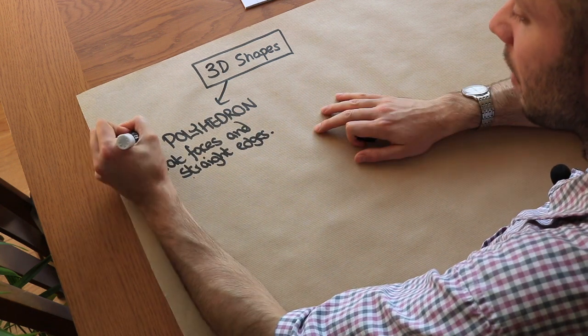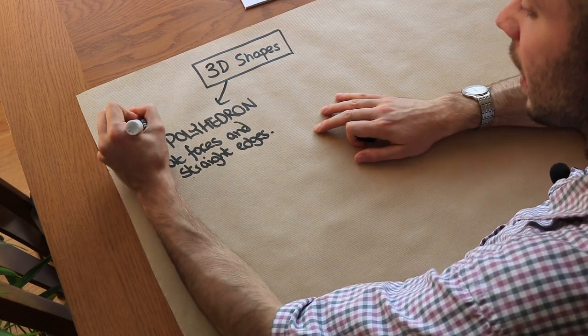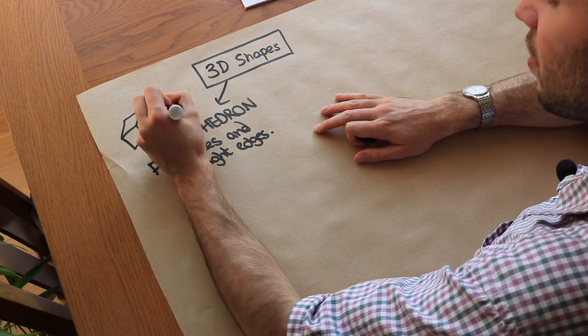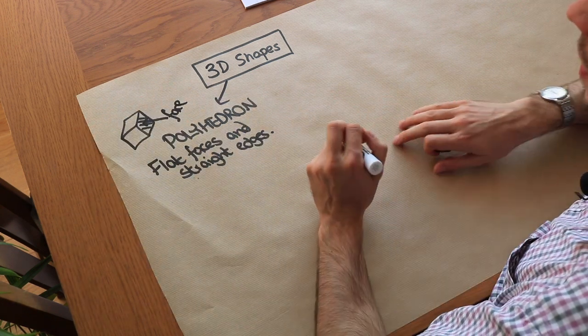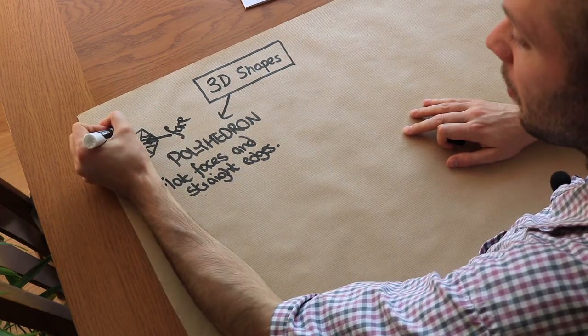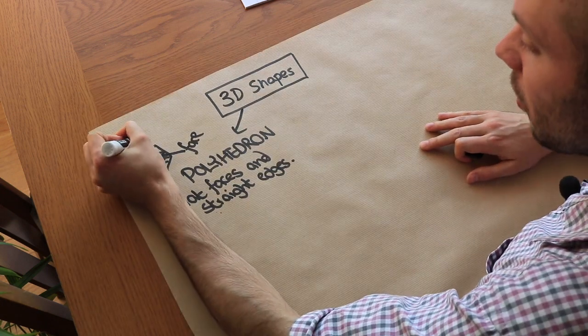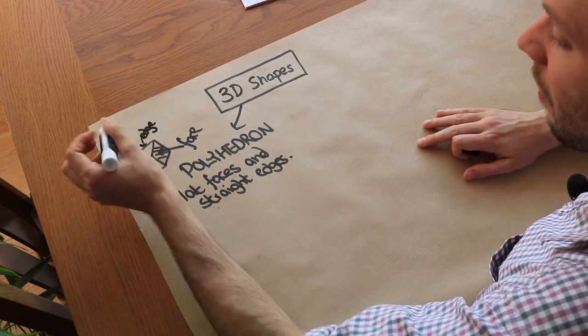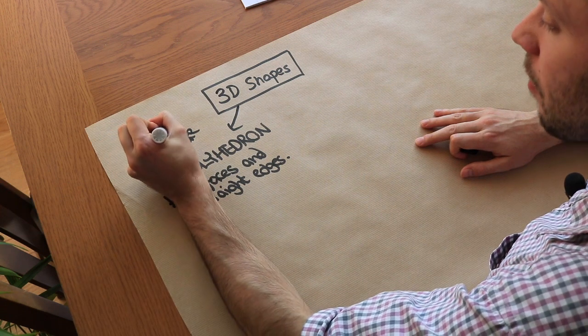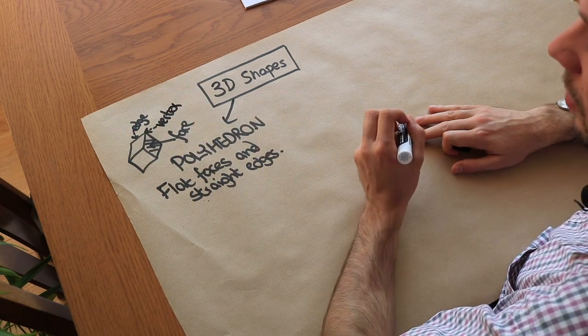Now the face of a 3D shape, if I drew this as a cube, a face is one of the surfaces of the 3D shape. And remember that an edge is one of the lines and a vertex is one of the corners of the 3D shape.